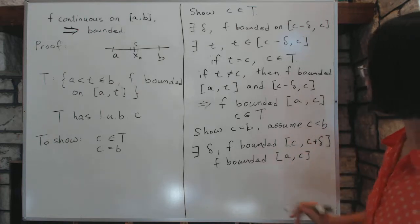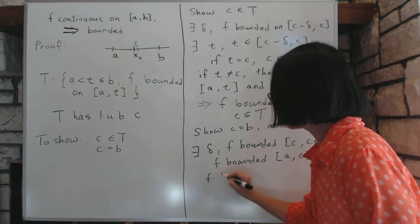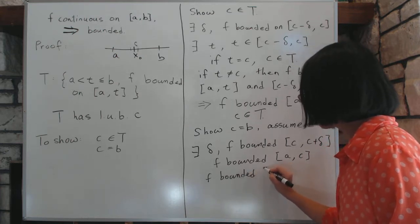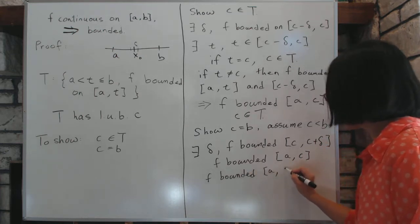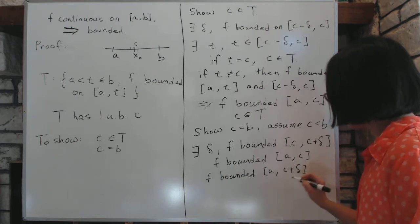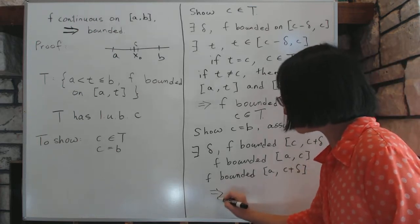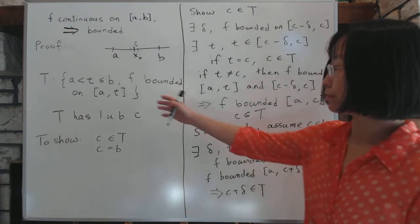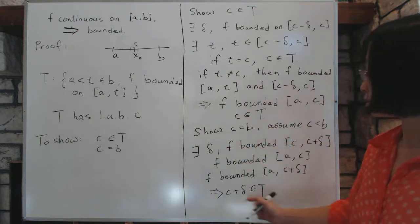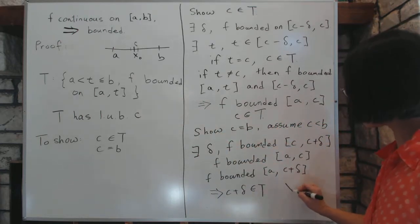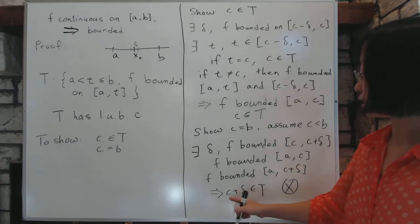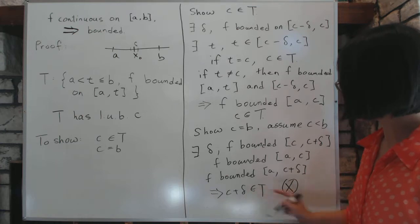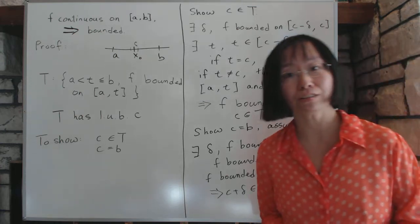we can then combine these two intervals to say that F is bounded from A all the way to C plus delta, but that would mean C plus delta is an element of T, because that's the definition of element of T, is things that F is bounded on. And that's a contradiction, because C is the least upper bound of T. It cannot possibly get bigger. So, this causes a contradiction, which concludes the proof.